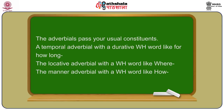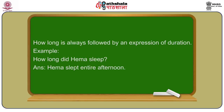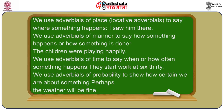Adverbials pass your usual constituency tests. For example, a temporal adverbial with a durative wh-word like for how long, a locative adverbial with a wh-word like where, and a manner adverbial with a wh-word like how. Suppose I ask: how long did Hema sleep? You can answer by saying: Hema slept the entire afternoon. That tells you that the entire afternoon is a constituent — they are well-behaved constituents.